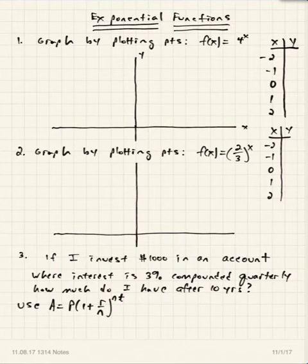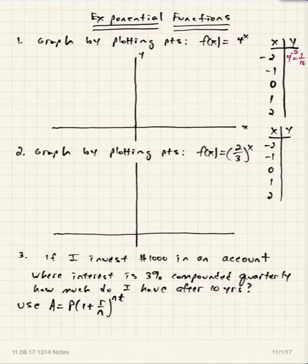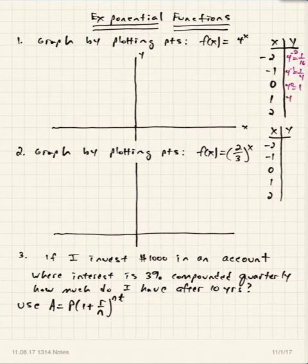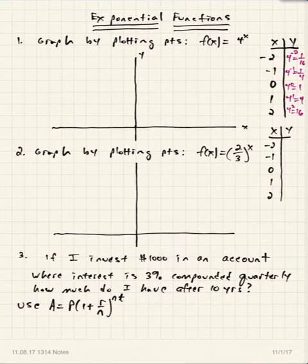We have the exponential function 4 to the x. When x is negative 2, you have 4 to the negative 2, which is 1/16. Remember that a negative exponent flips the constant and changes it into a fraction - it does not make it a negative number. When x is negative 1, you get 4 to the negative 1, which is 1/4. When x is 0, you have 4 to the 0, which is 1. When x is 1, you get 4 to the 1st which is 4, and when x is 2, you get 4 squared, which is 16. Now you've got a decent group of points - go ahead and use those to sketch the graph.